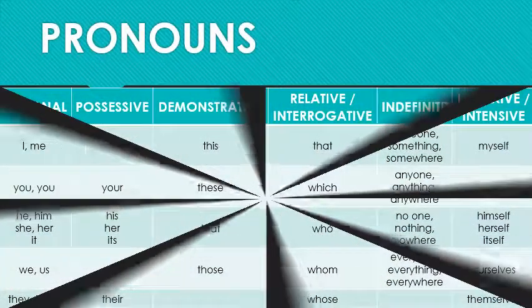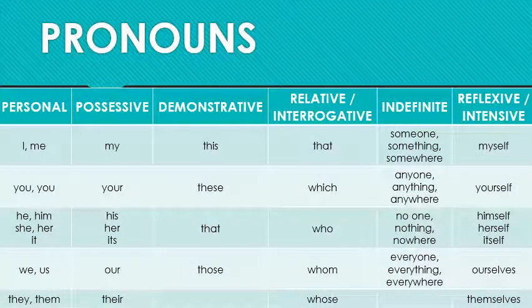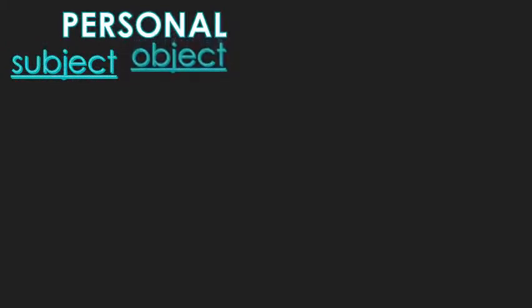There are many different types of pronouns: personal, possessive, demonstrative, relative, interrogative, indefinite, reflexive, and intensive. Today we're just going to talk about those first two groups — the personal and possessive. Personal pronouns are divided into two types: subject and object.